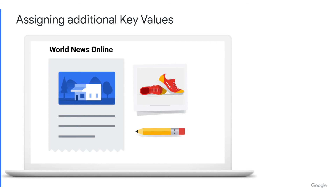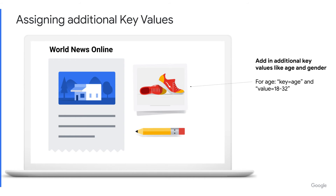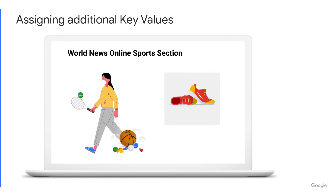Next, you can set up key values for additional targeting like age and gender. For age, the key would be called age and the value would be 18 to 32. For gender, the key would be gender and the value would be female.